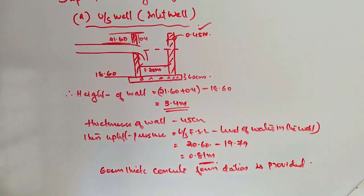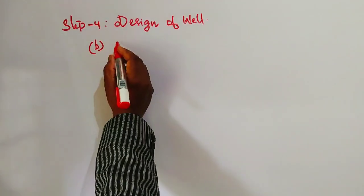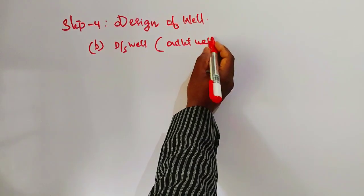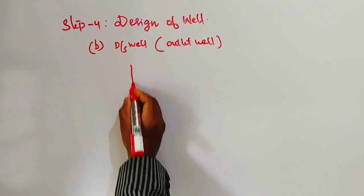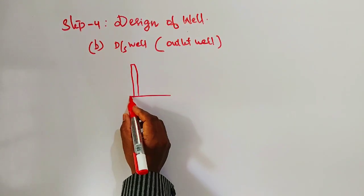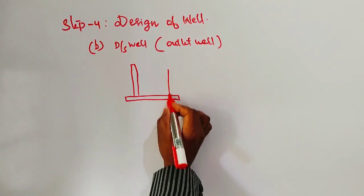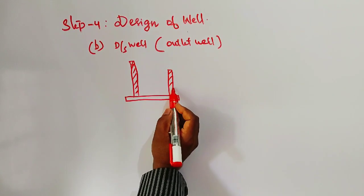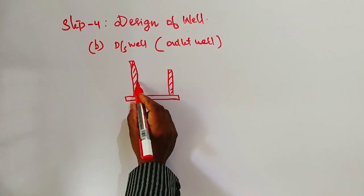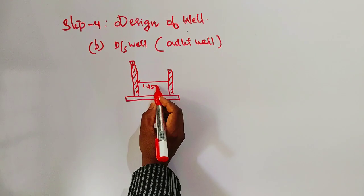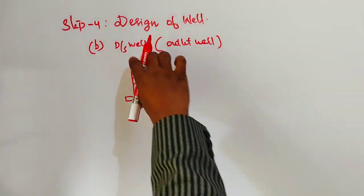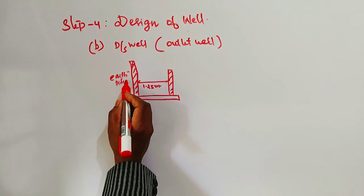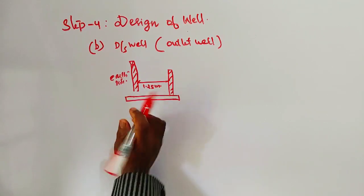Upstream well design is complete. Next, second one: downstream well or it is called outlet well. Here we have a hume pipe, downstream water flows here. This is the wall of outlet well. Width is 1.25 meters as given in the question. Wall height difference is 1.5 meters. This side is the earth side, and water flows through.